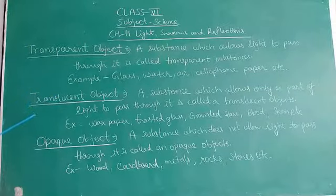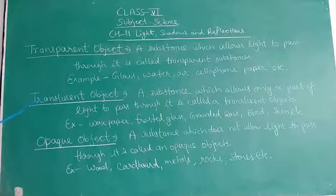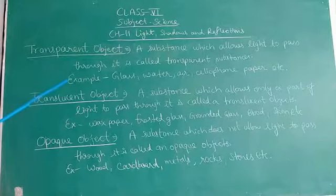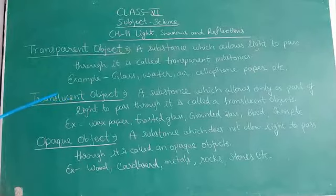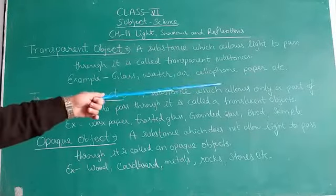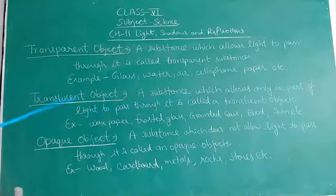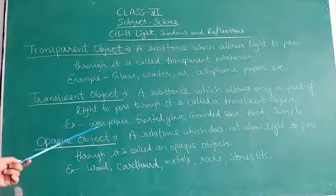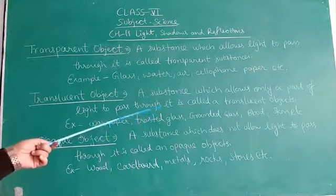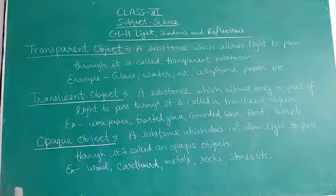The next point is translucent objects. Translucent objects are those objects from which we cannot see clearly, and which allows only a few parts of light to pass through it. A substance which allows only a part of light to pass through it is called a translucent object. For example, wax paper, frosted glass, ground glass, blood, skin, etc.